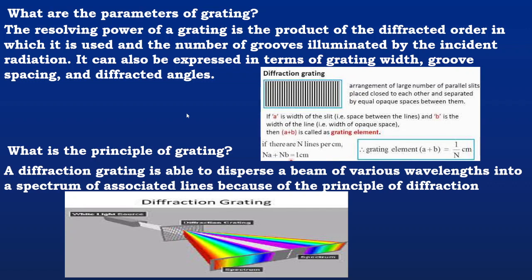What is the principle of grating? The diffraction grating is able to disperse a beam of various wavelengths into spectrum of associated lines because of the principle of diffraction. So the principle of grating is, in one word, the principle of diffraction.